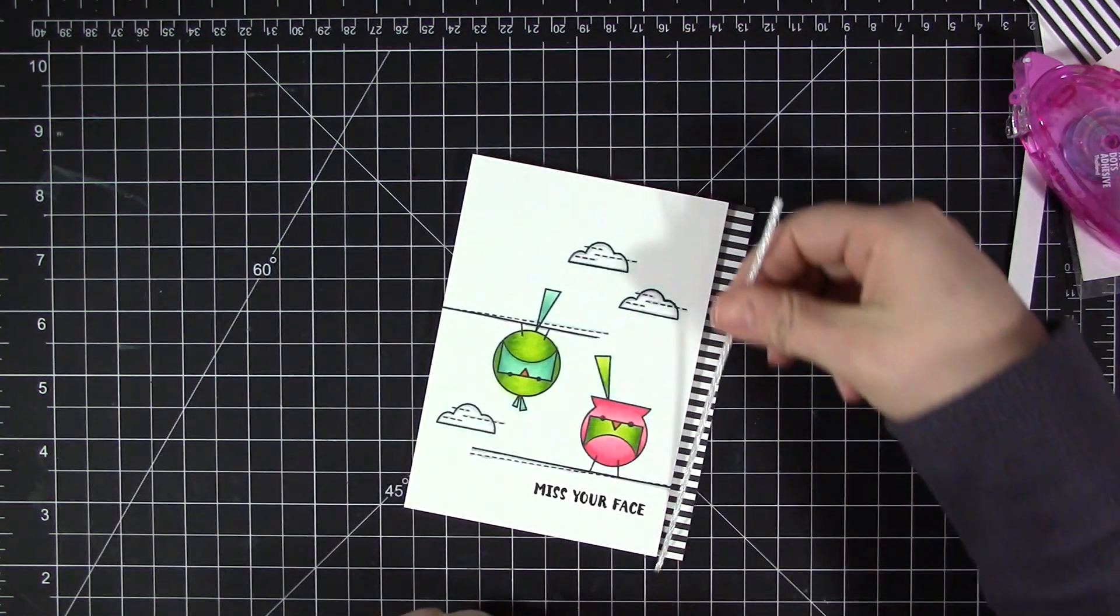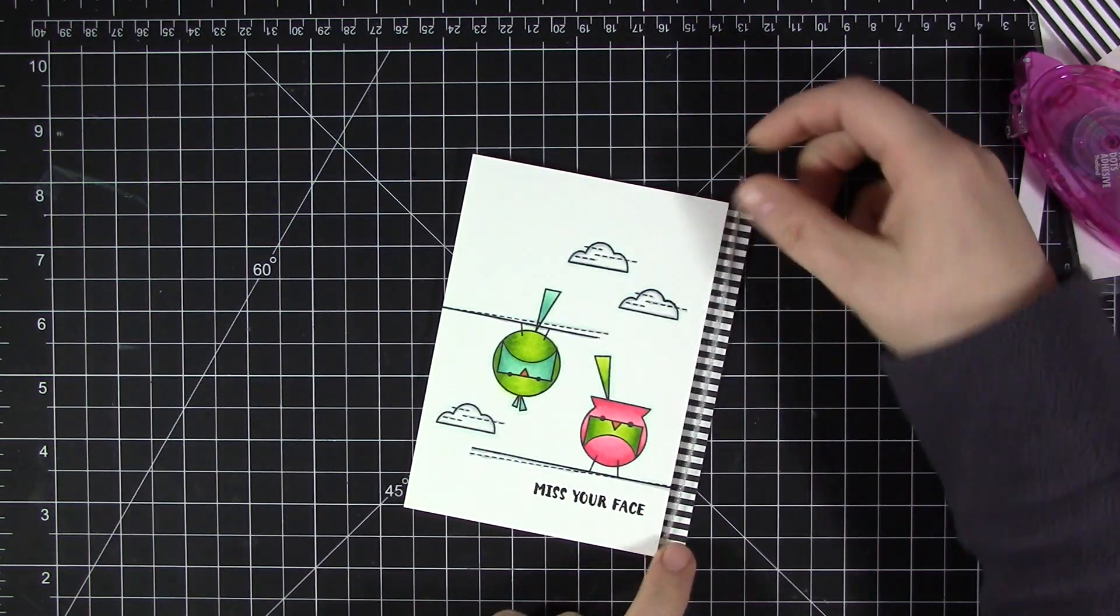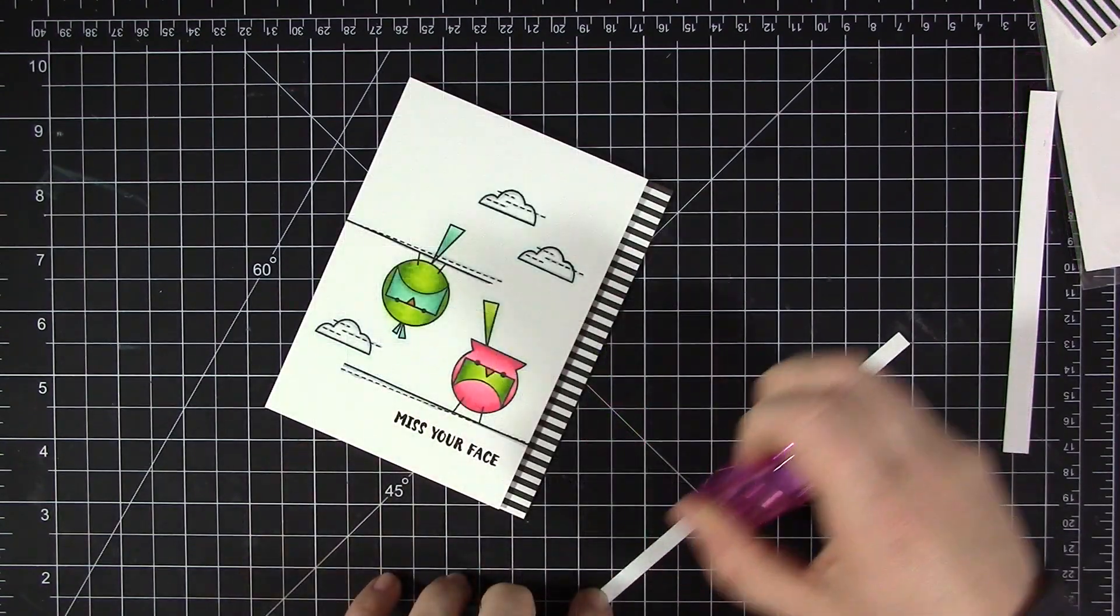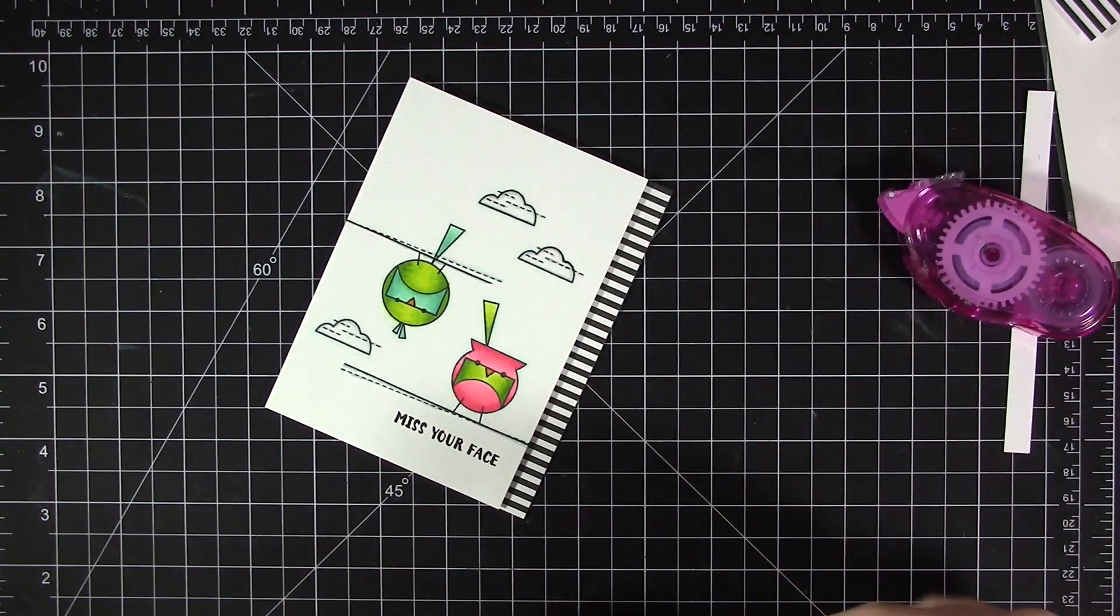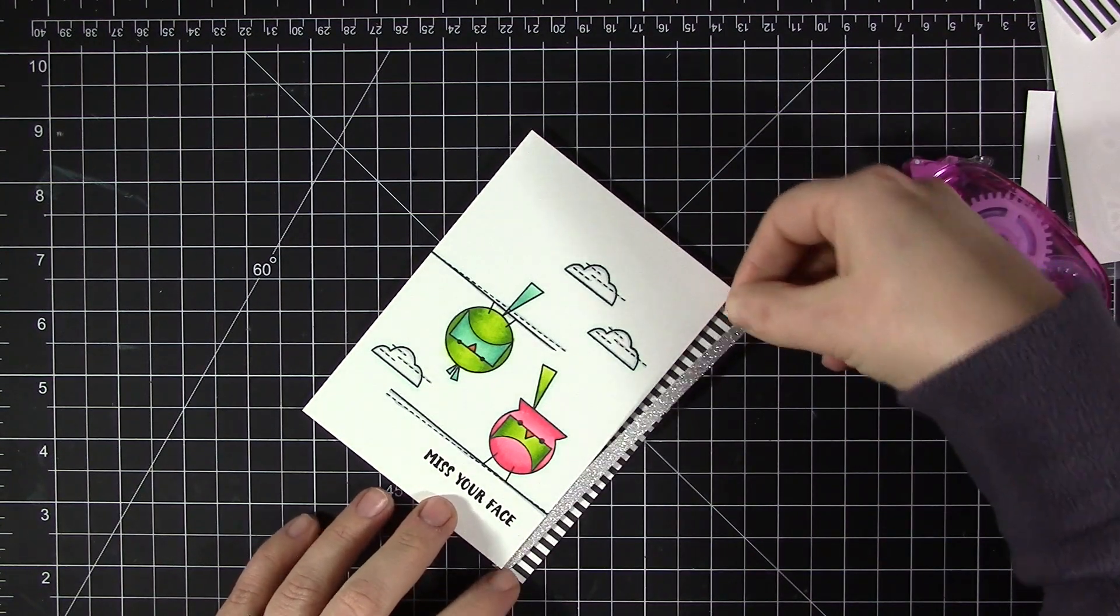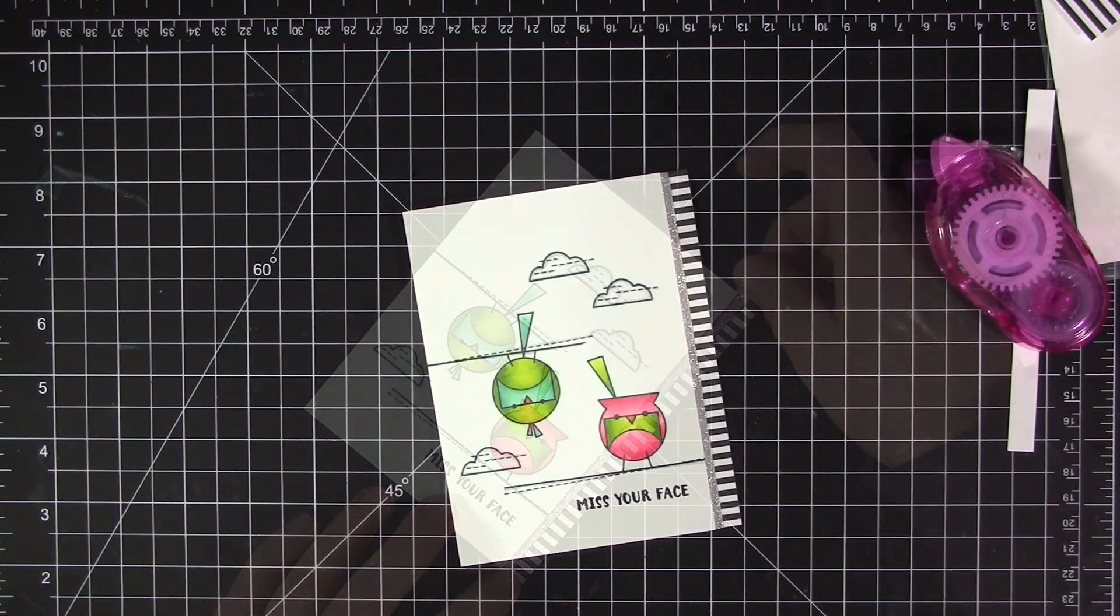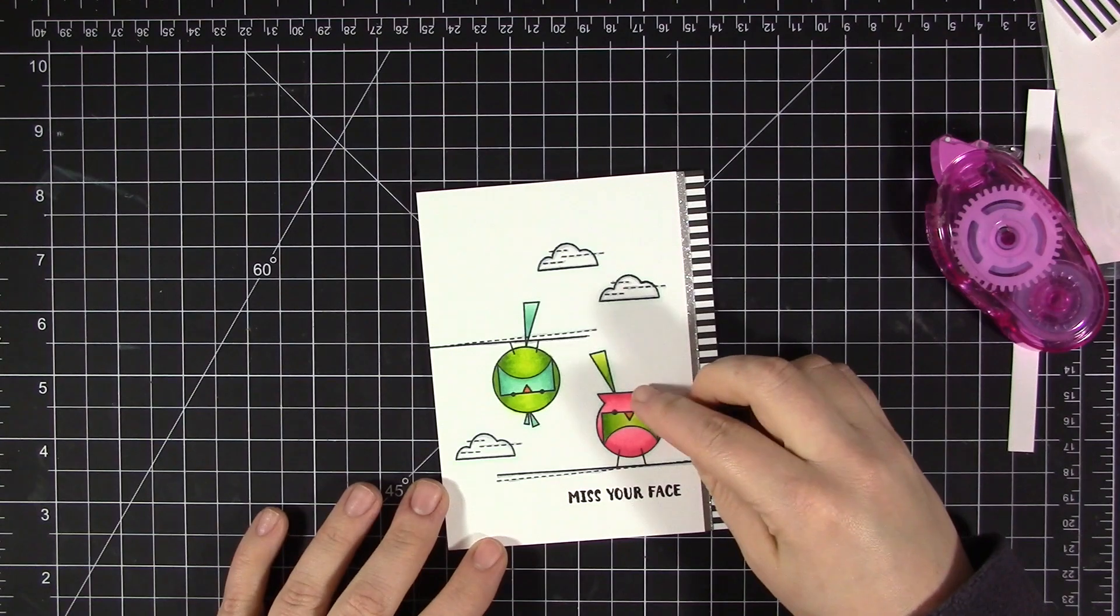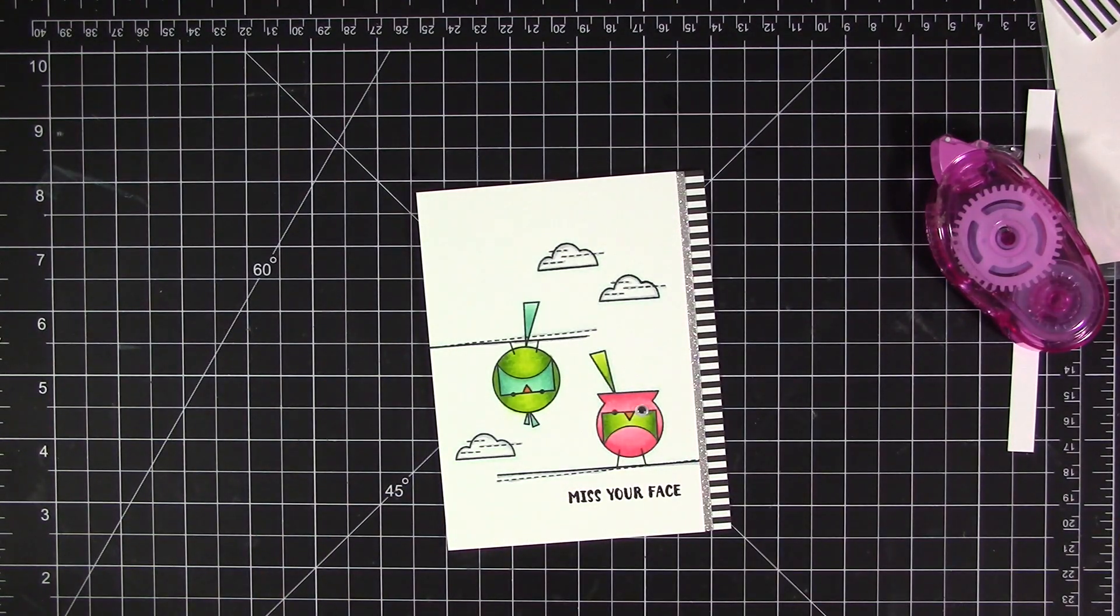Now I'm going to add the silver glitter strip. The one I had originally cut out was a little bit thinner than I wanted. I wanted it to kind of tuck underneath this a little bit just so that you only saw the glitter under the panel. So I went ahead and cut a slightly larger one and then just adhered that on.